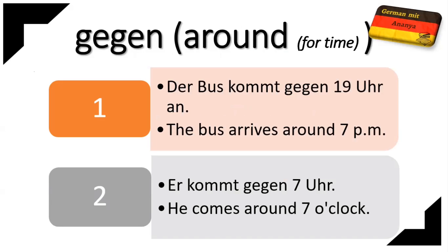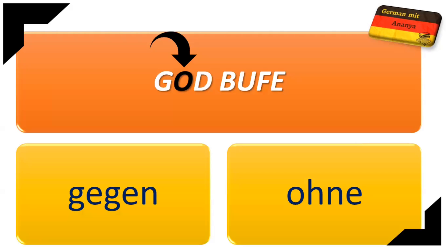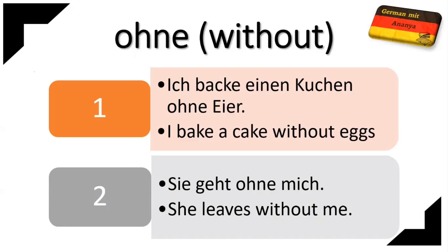Gegen also has a second meaning: 'around,' used when you are not sure of the exact time. For example: 'Der Bus kommt gegen 19 Uhr an' — The bus arrives around 7 pm. You can also say 'he comes around 7 o'clock.'